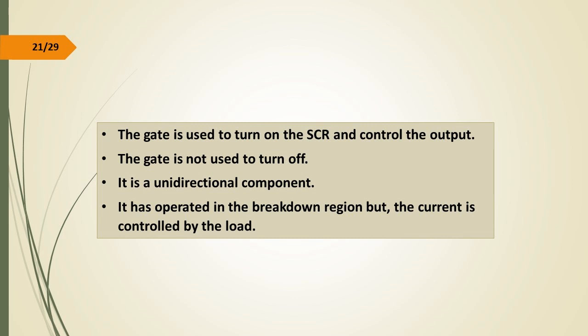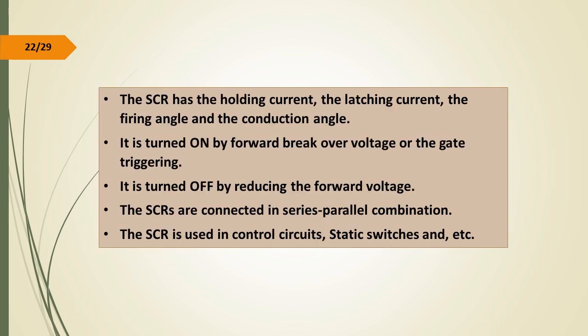The SCR operates in the breakdown region where current is controlled by the load. It has the holding current, the latching current, the firing angle, and the conduction angle. It is turned on by the forward break-over voltage or gate triggering, and turned off by reducing the forward current below the holding current. SCRs can be connected in series-parallel combination. The SCR is used in control circuits and static switches.